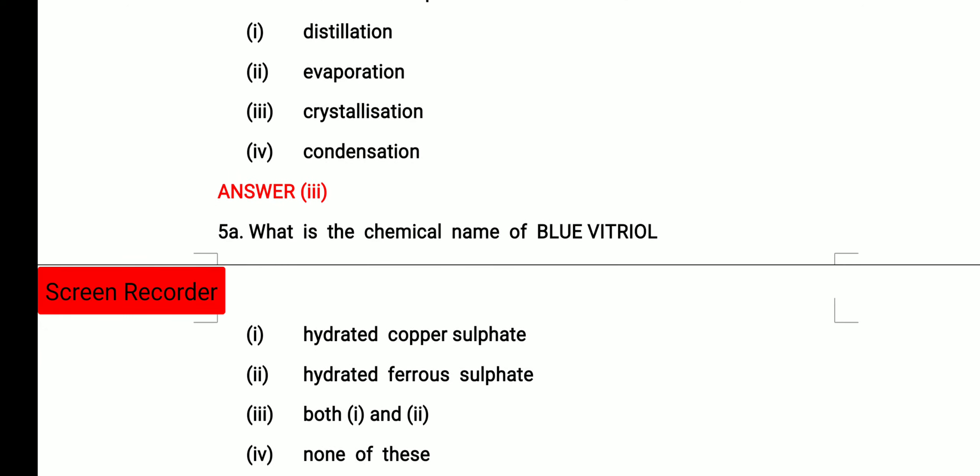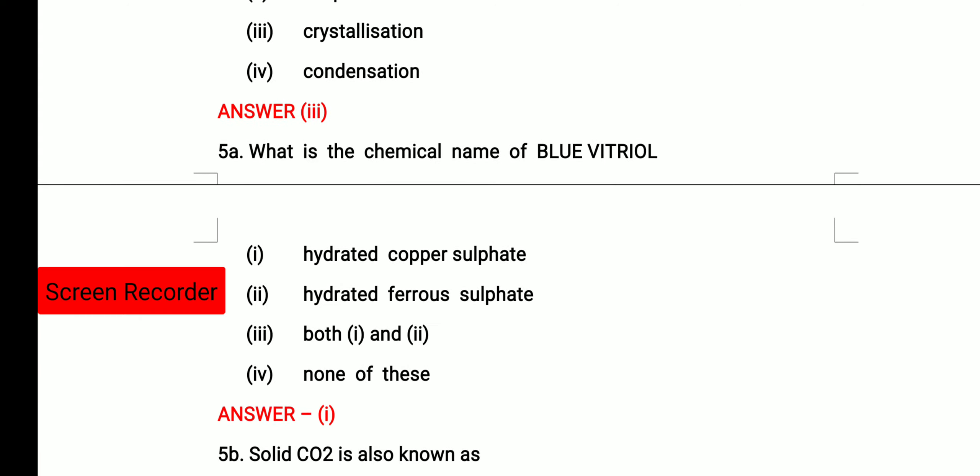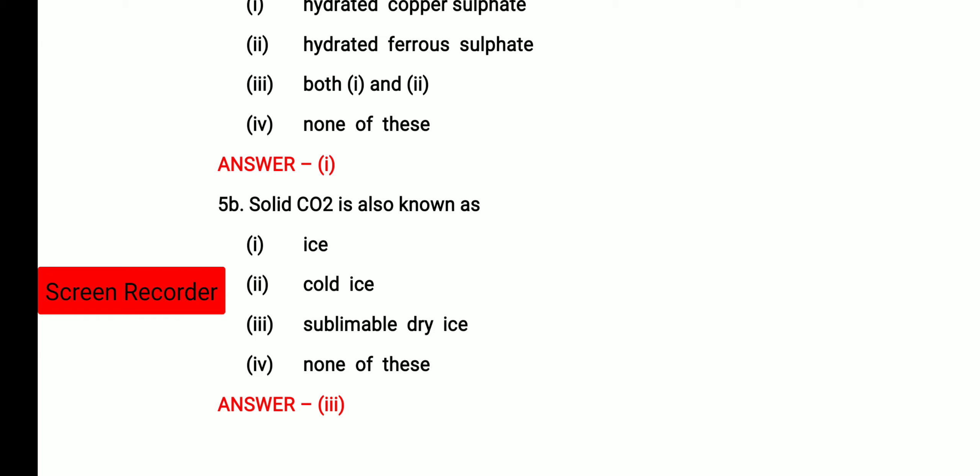What is the chemical name of blue vitriol? Its answer is hydrated copper sulfate, whereas hydrated ferrous sulfate is known as green vitriol. Then solid carbon dioxide is also known as ice, cold ice, sublimable dry ice, none of these. So its answer is sublimable dry ice.